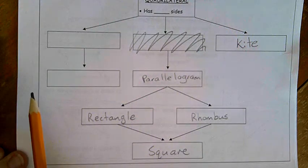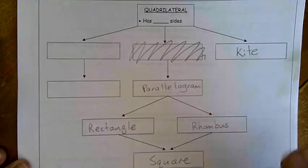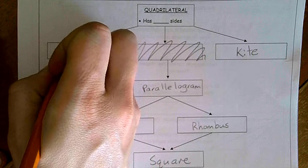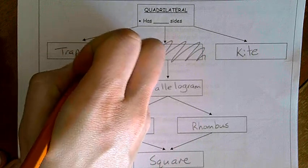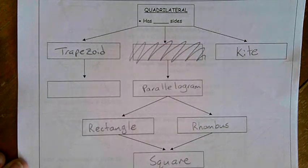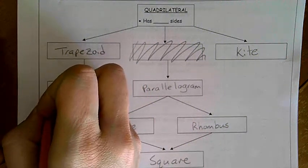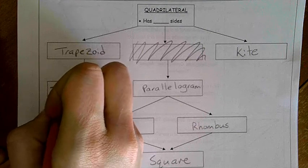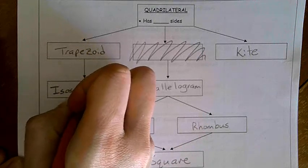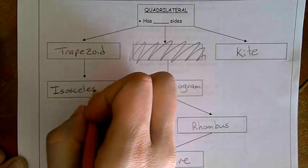So that leaves us with our far left side. We're going to start with a trapezoid. A trapezoid that has one set of parallel sides, one set.